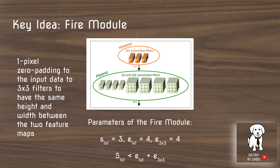The Fire module is the key layer introduced in the SqueezeNet paper. It squeezes the features with a squeeze layer consisting of 1x1 convolutional filters, and then expands with a combination of 1x1 and 3x3 filters. So the feature map goes from small to bigger from Squeeze to Expand.